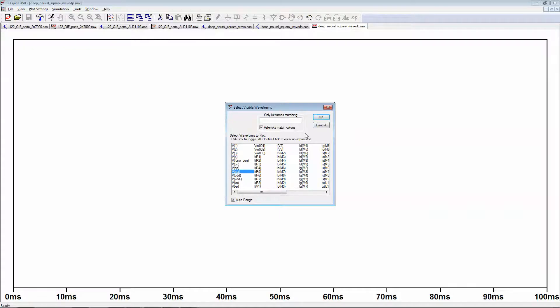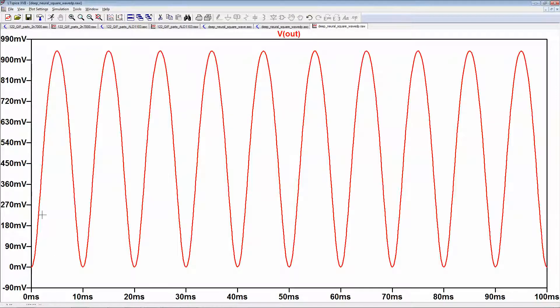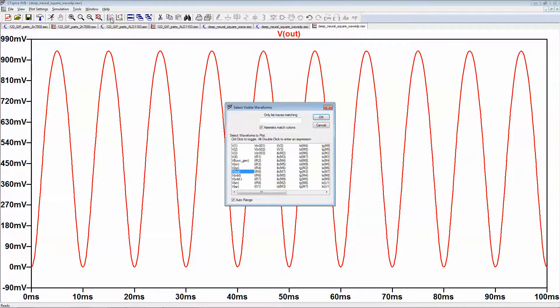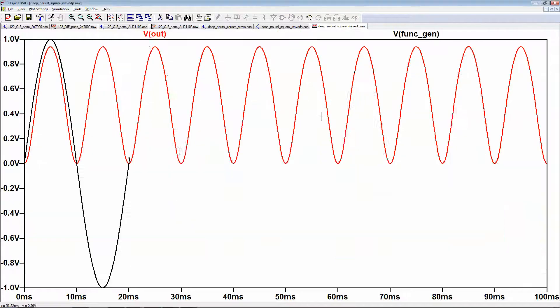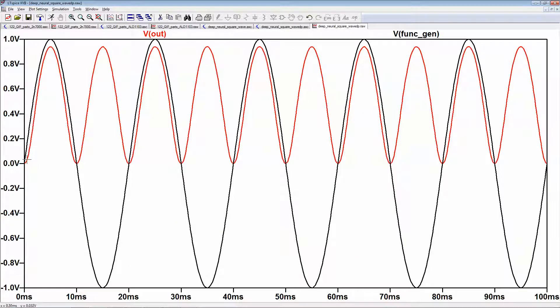And plot V out. You can see it looks like a sine wave. It'll be a little more obvious when we plot it versus the function generator. We can see that it cuts out half the cycle and it's double the frequency, so it's working so far.